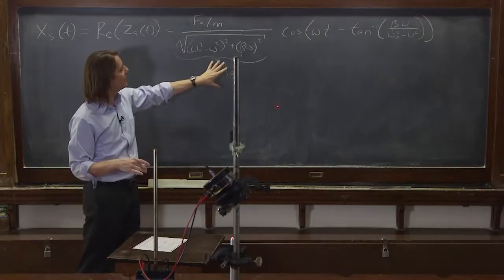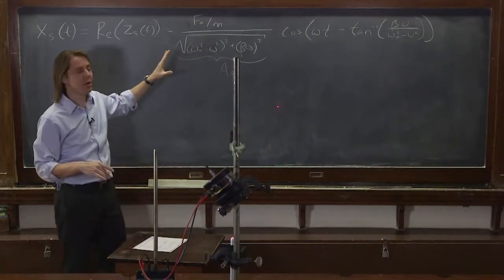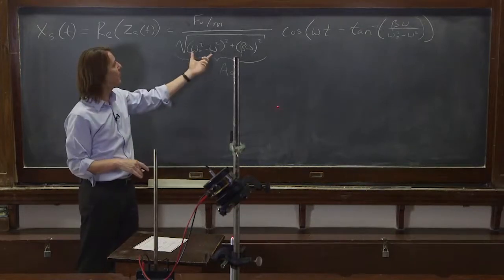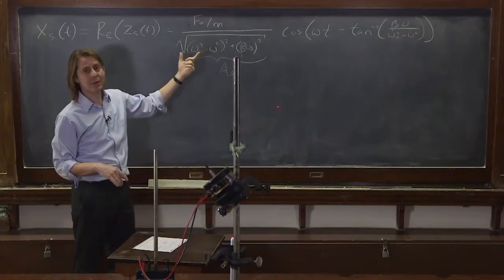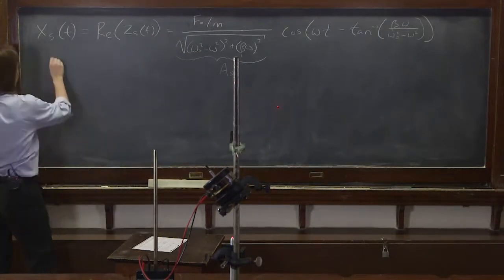So this thing, AS, the steady state amplitude, gets really large around omega naught. And then when you're far from omega naught, this term becomes bigger. It becomes really big because it's squared. And then it drives the amplitude back down.